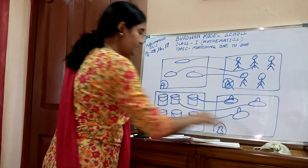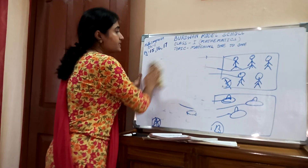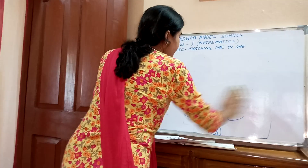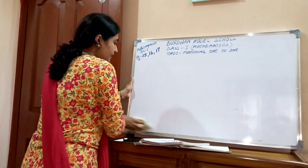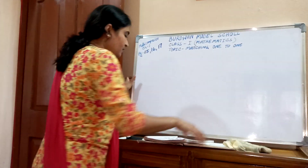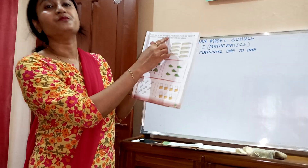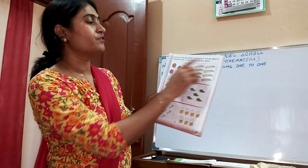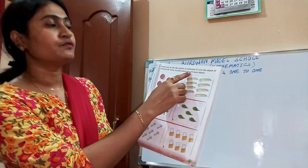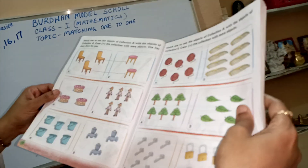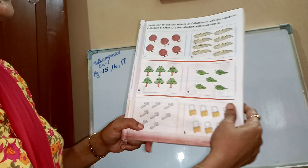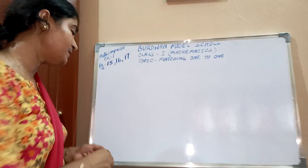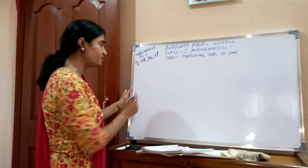Turn over to page number 17. Here is a little bit of difference, but match on the basic shape. Match one to one the objects of collection A with the objects of collection B, then cross the collection with more objects.